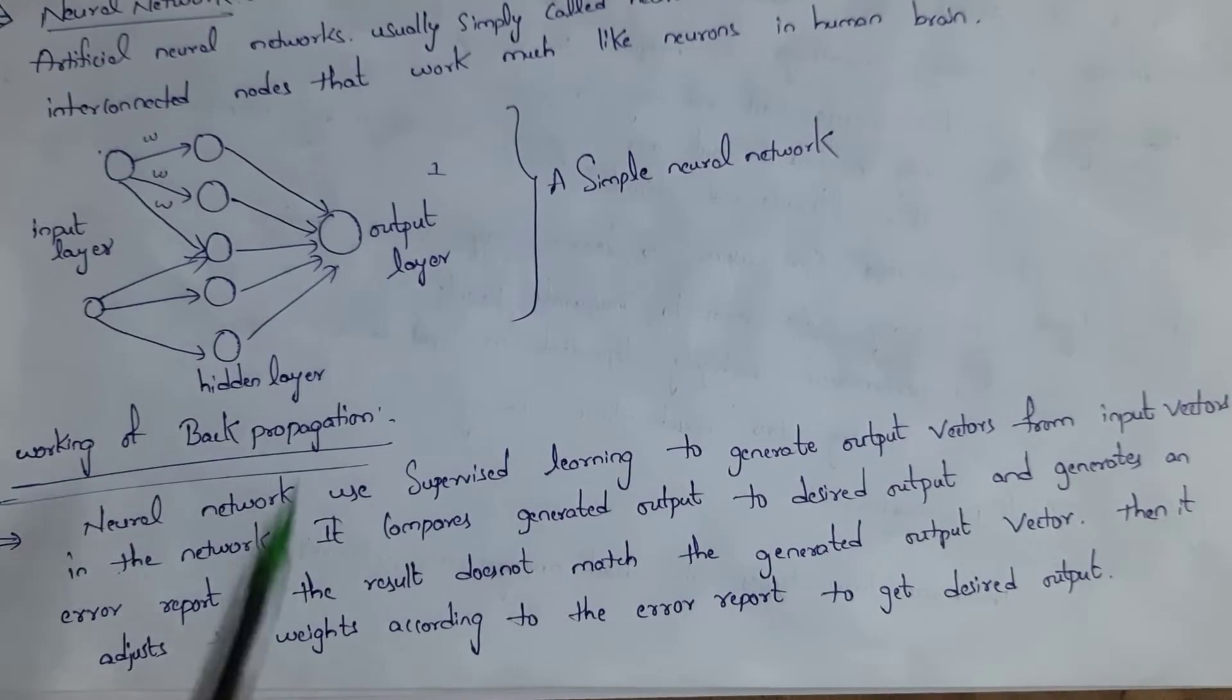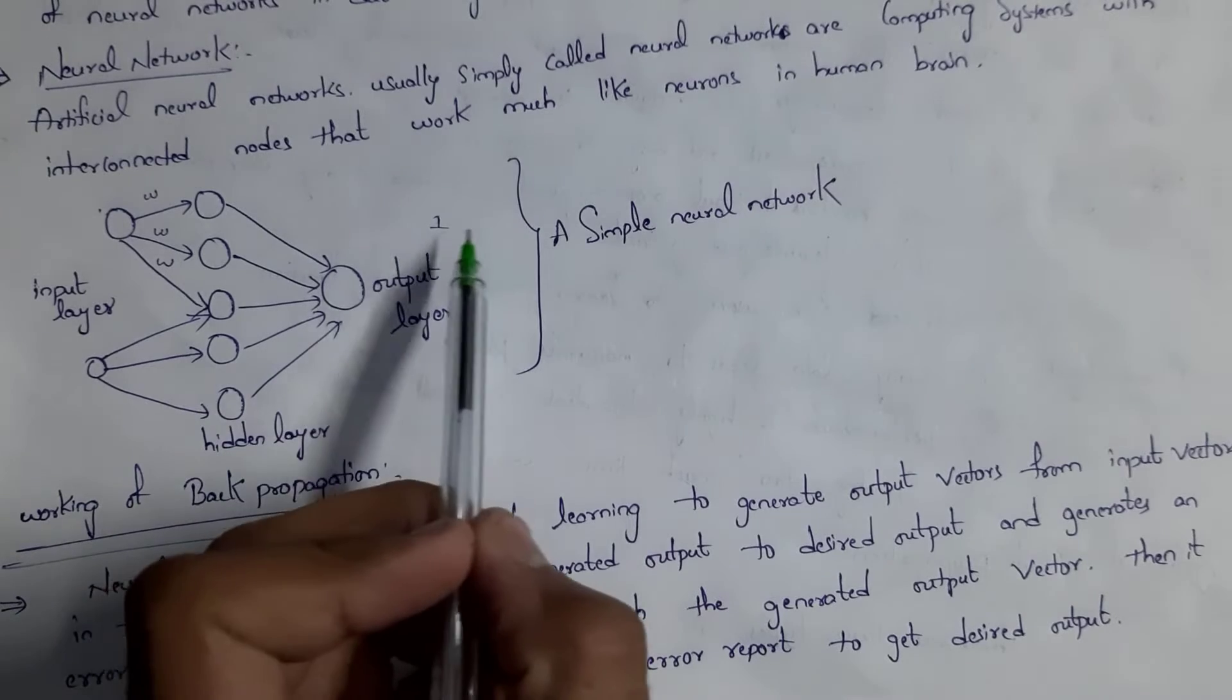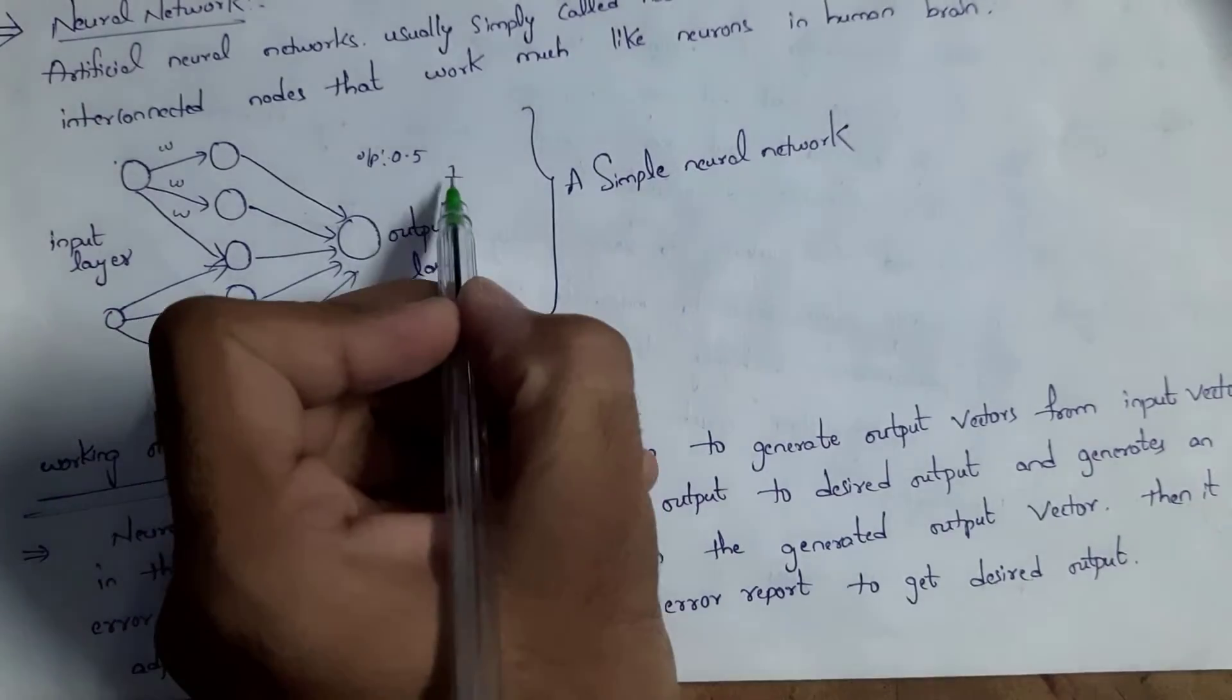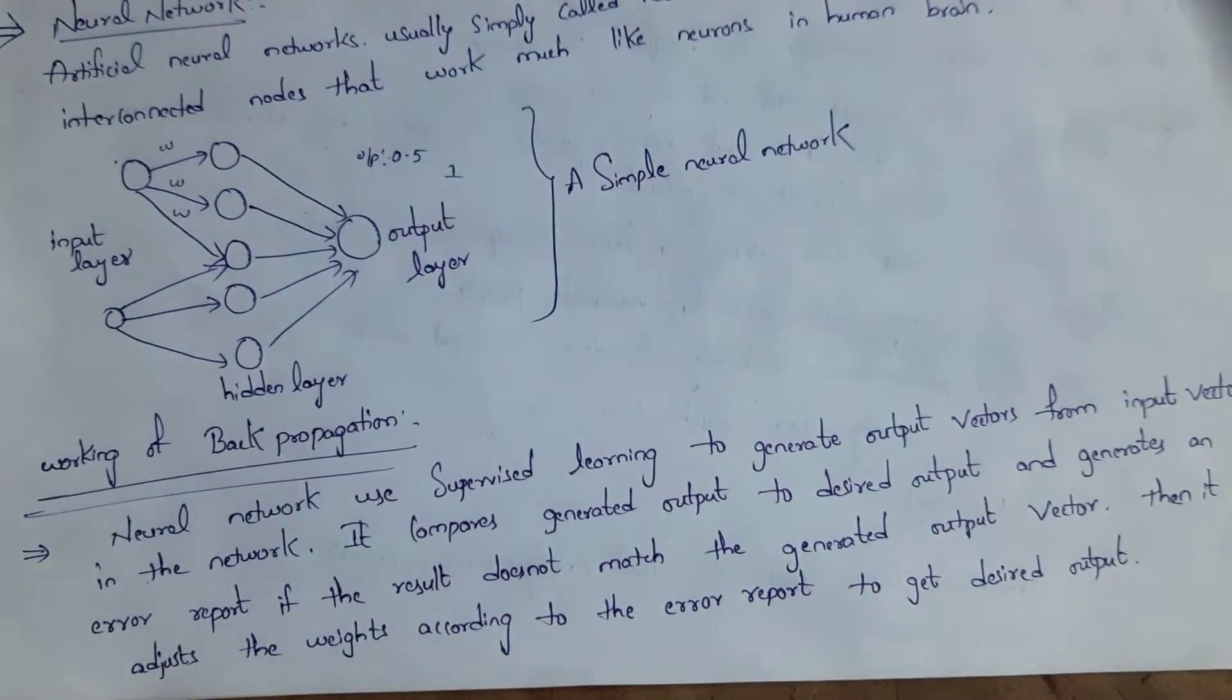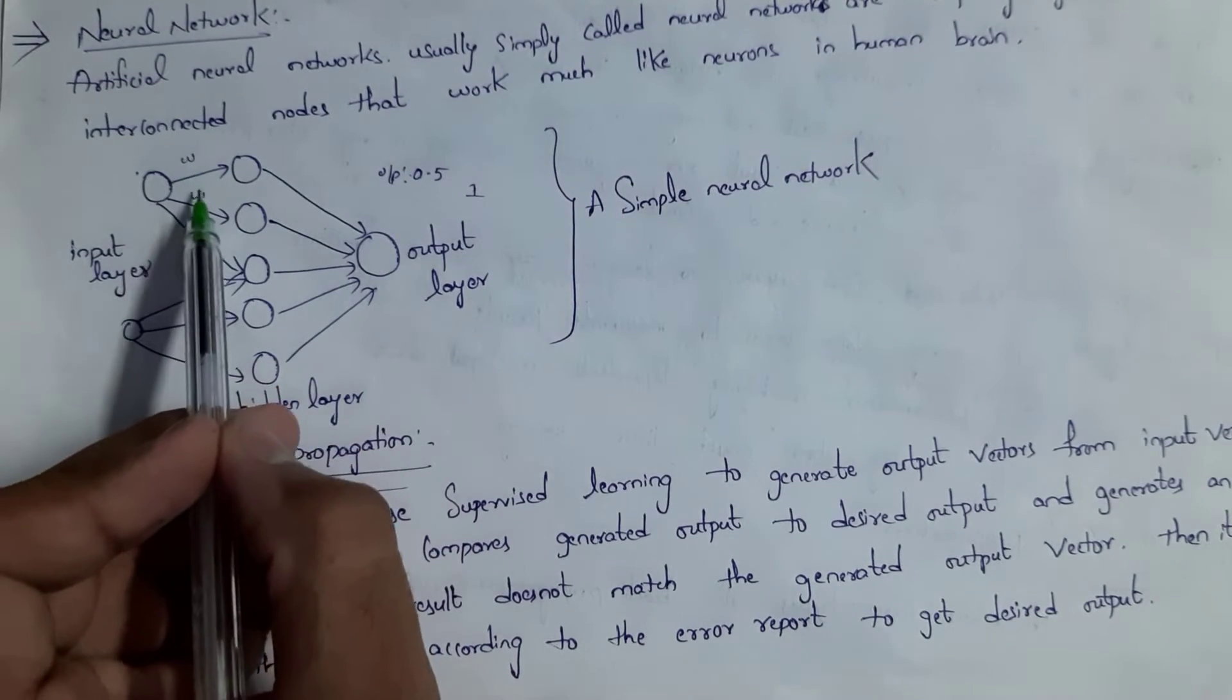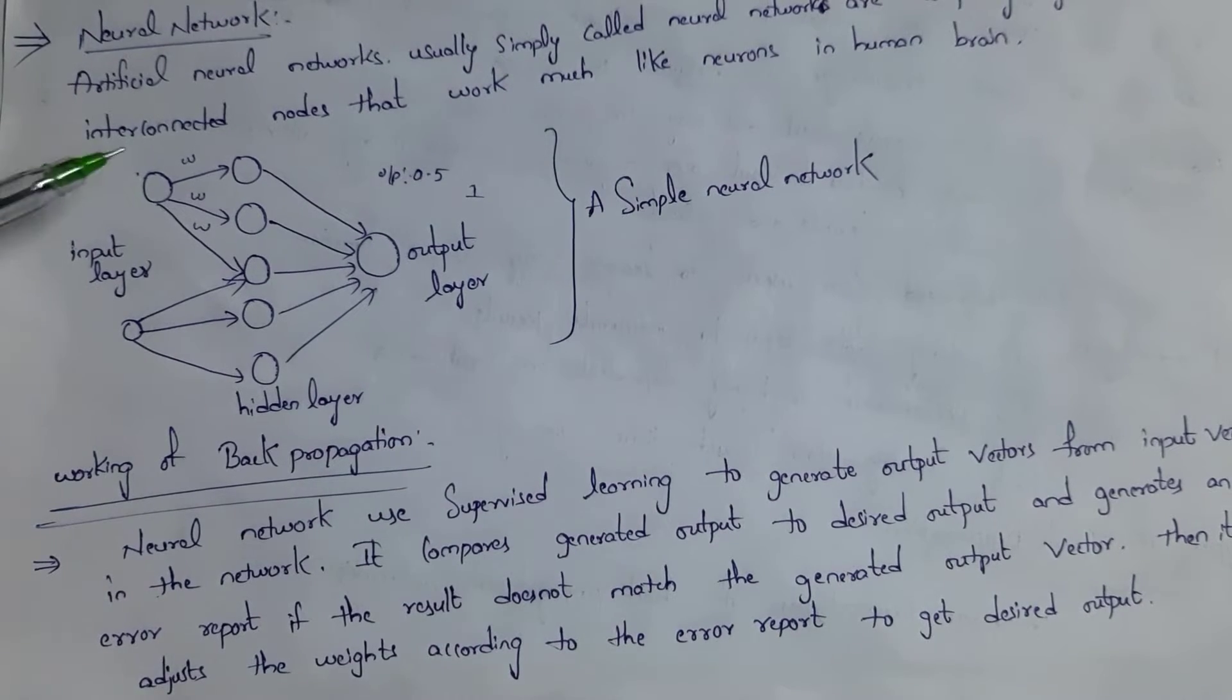For example, here I want output as 1. This 1 is the desired output which I want. If I get output as 1, it is okay. But if I get output as 0.5 or like that, then it is considered as error. Here I got output as 0.5 but I want output as 1, so this 0.5 is considered as error. Whenever I get error, I will send back this error to the input vector so that again we need to modify these weights in order to generate our desired output. We should keep on modifying these weights in order to generate our desired output.